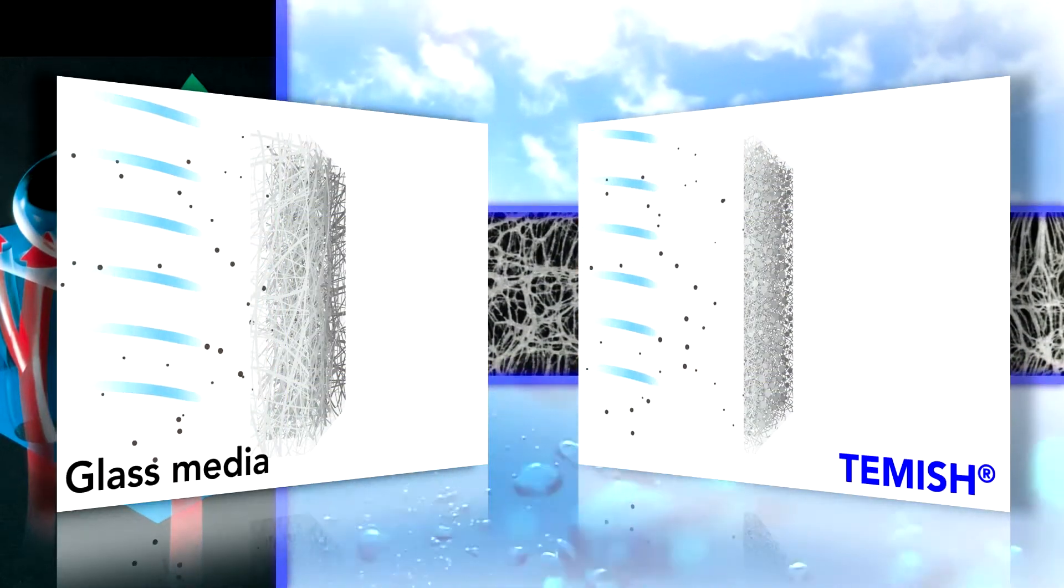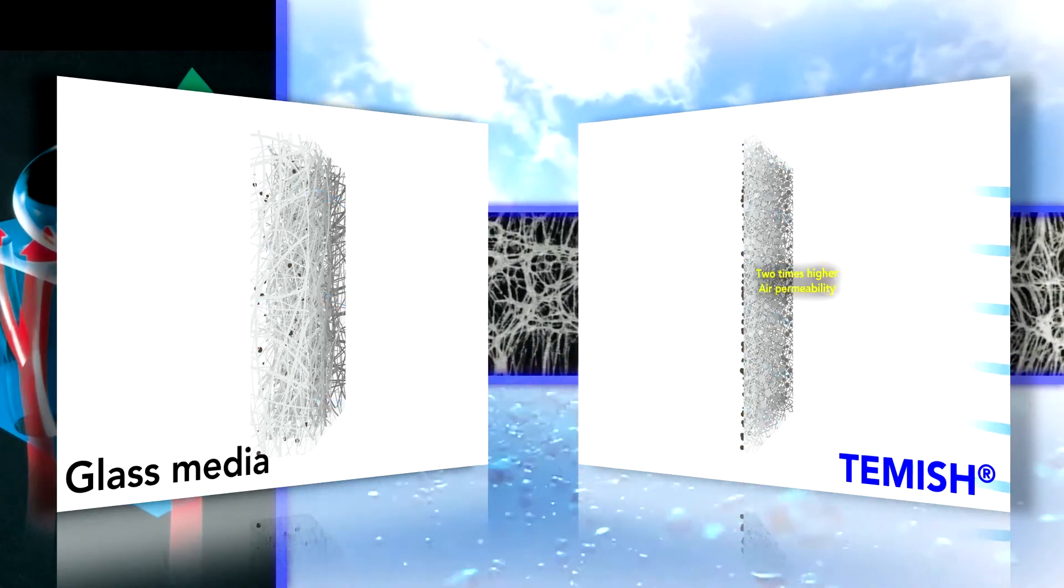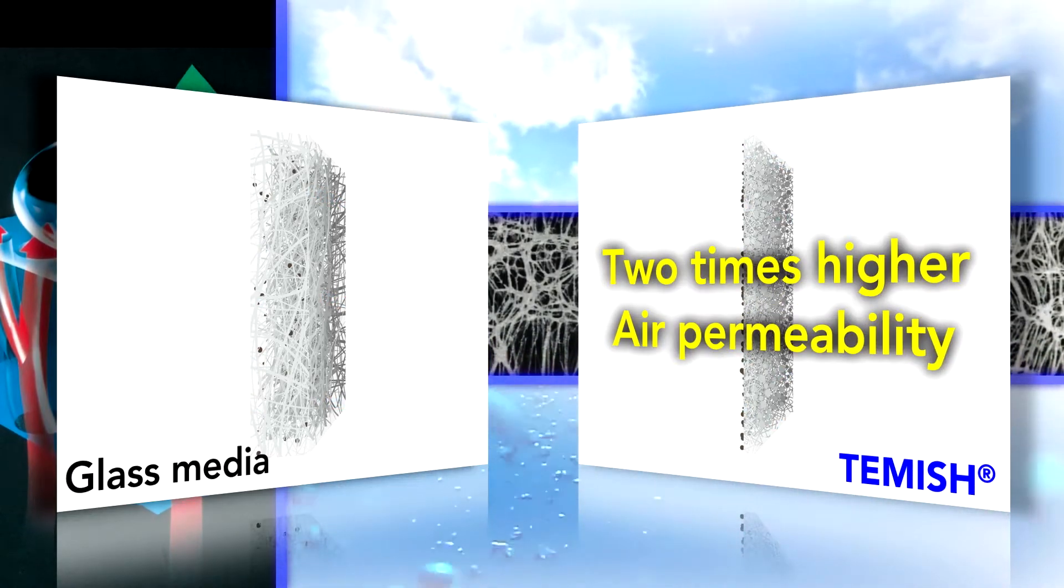Temesh air filter is thinner than glass media but it has the same collection efficiency and two times higher air permeability than glass media.